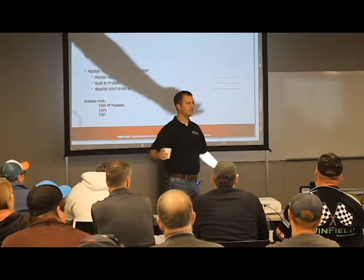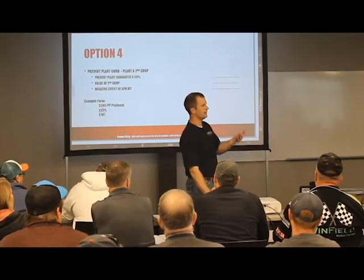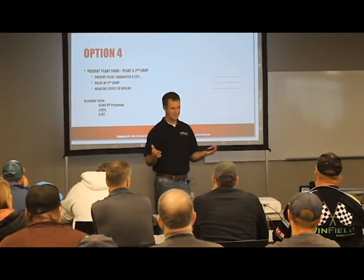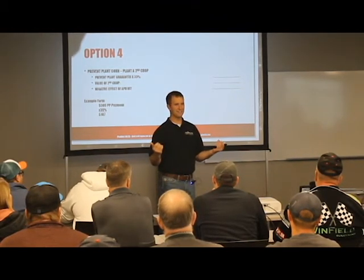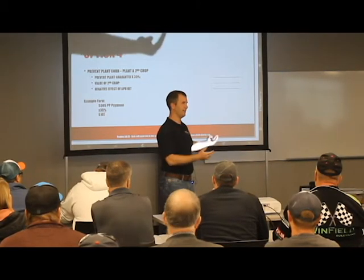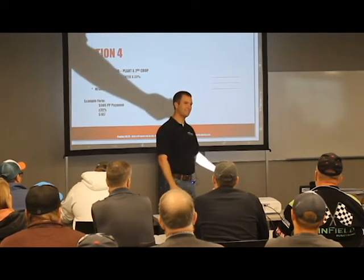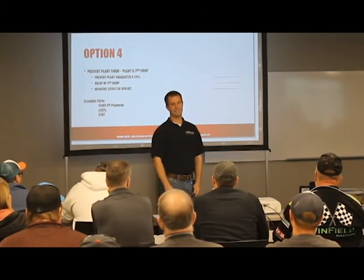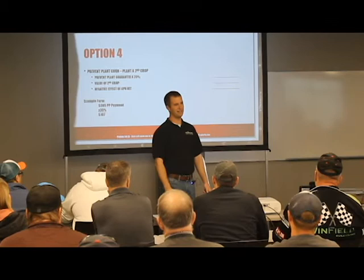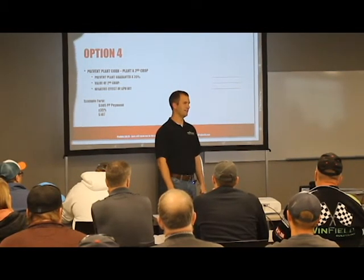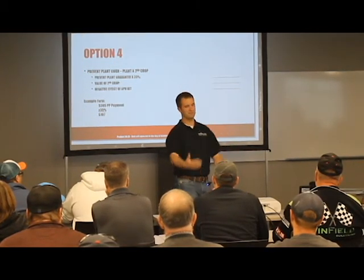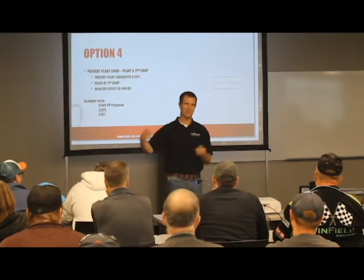The whole reason behind all these rules about chopping or baling is that they don't want you to have two crops - two separate incomes off of this field. They want your prevent plant payment to be the thing. The reason for that is because people used to say they're prevent planting corn, get their full payment, then go plant milo - which is what they wanted to plant anyway - and get two crops in a year. So all these rules that you see being added every year to prevent plant are because people are finding a way through them.